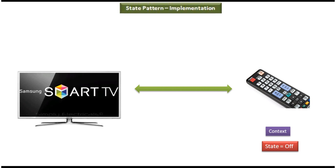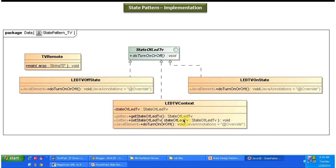Based on the internal state, the behavior will be different. This is the class diagram of the scenario we just discussed. You can see the interface StateOfLEDTV which has the abstract method doTurnOnOrOff. The LED TV has two states: LEDTVOnState and LEDTVOffState. LEDTVOnState implements StateOfLEDTV and provides implementation of doTurnOnOrOff, which turns on the TV.